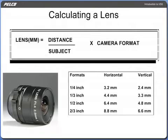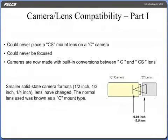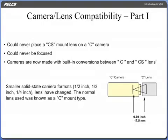This illustrates the formulas for calculating a lens. Initially, you could never place a CS mount lens on a C camera — it would mount properly, but the camera lens assembly could never be focused. To alleviate this problem, cameras are now made with built-in conversions between C and CS lenses. Smaller solid-state camera formats — one-half inch, one-third inch, one-fourth inch — lenses have changed. The normal lens used was known as a C mount type.